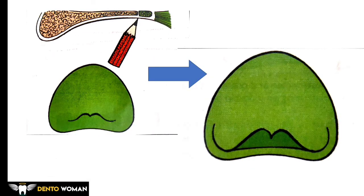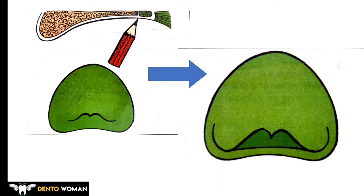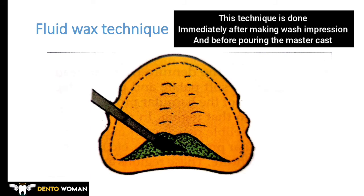After scrapping the master cast, the post-dam should be checked. The trial base should be softened and re-adapted. A space between the base plate and the soft tissue indicates improper or under post-damming. The fluid wax technique is done immediately after making the wash impression and before pouring the master cast — this is the main difference from the scrapping method. Zinc oxide eugenol and impression plaster are suitable impression materials for this technique, as fluid wax adheres well to them.